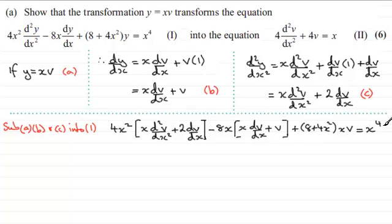So that's that done. Now we just need to expand out our brackets. So we'll come over here. This looks like it's going to be quite long. So we're going to have 4x cubed d2v by dx squared. And then 4x squared times 2dv by dx is going to give us plus 8x squared dv by dx.